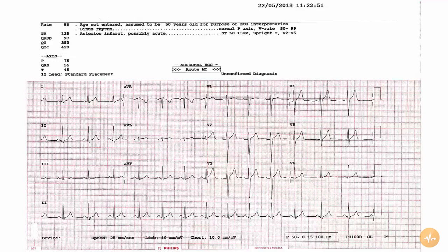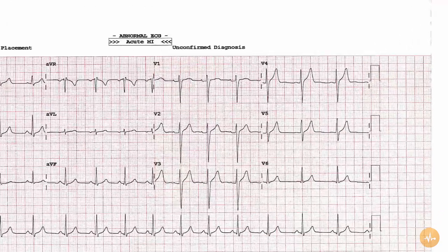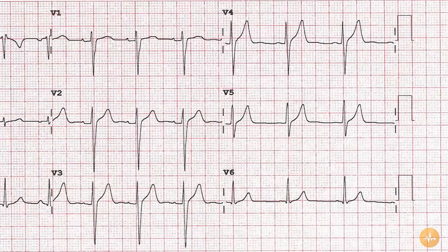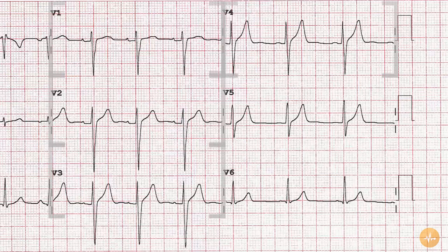Let's start by reminding ourselves of the names of the leads. On the right-hand side of the ECG are the six chest leads. These are simply named in order: V1, V2, V3, V4, V5 and V6.